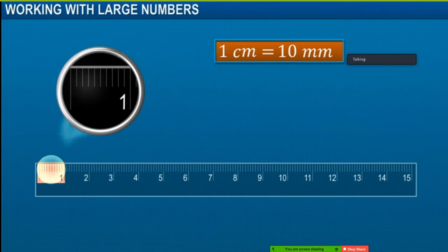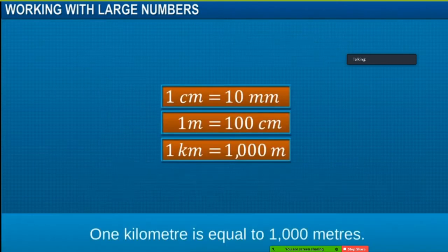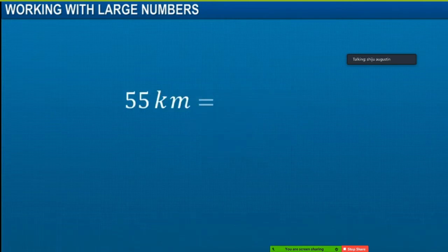To convert kilometers into meters, we multiply by 1,000. For example, 55 kilometers is equal to 55 into 1,000 meters, which is equal to 55,000 meters.